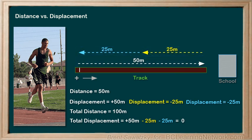We could also consider the total displacement using our positive and negative directions. First we have plus 50 meters, then negative 25 meters, and then another negative 25 meters. You add them all up and they are zero. So it does make sense.